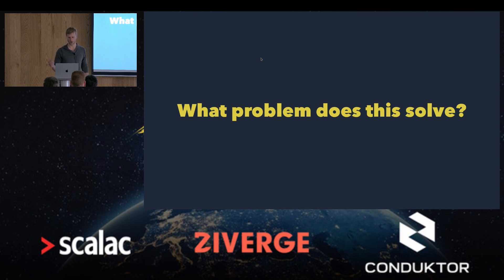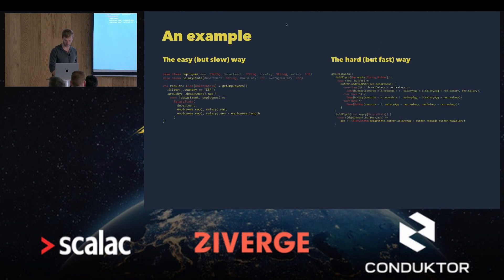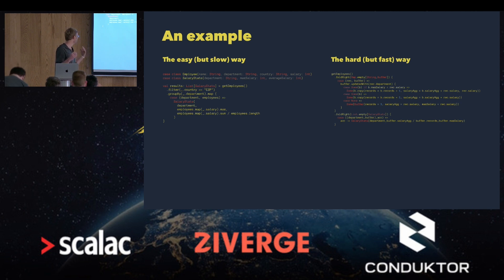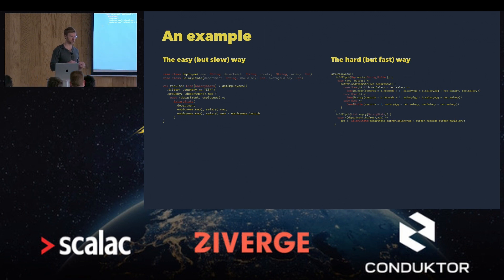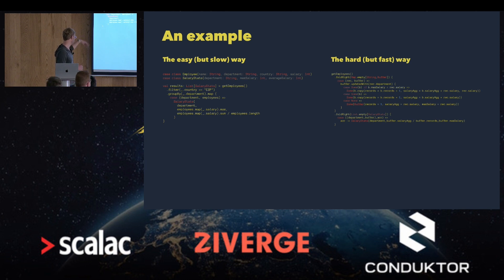What problem is this solving? Let's start with an example. Imagine we have a bunch of employees. An employee has a name, a department, a country, and a salary. We want to know, for all employees in Spain, what's the average and maximum salary by department. If we have a getEmployees method, the easy Scala way is to filter by country equals Spain, group by department, and do some computations to get our salary sets object.